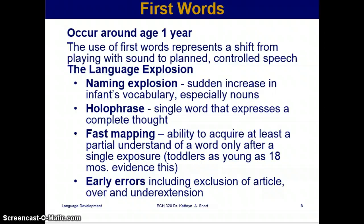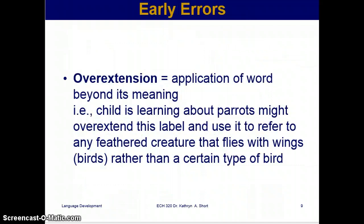Early errors include exclusion of articles, over-extension, and under-extension. Over-extension is the application of a word beyond its meaning — for example, a child learning the word 'parrot' might over-extend it and use it to refer to any bird with feathers and wings. Every time he sees any type of bird, he says 'parrot' — that's over-extension.